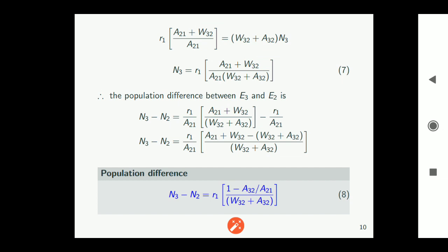Correct. a32. So equation 8 represents population difference between the two levels e2 and e3 in a four level system.